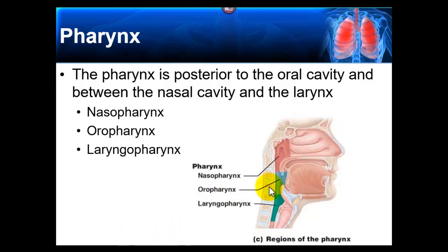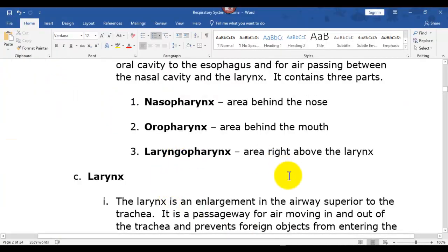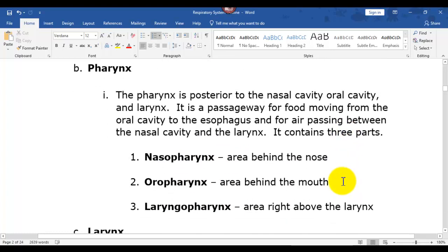In fact, right here is a little passage. Here's where it splits. This front part would be the trachea. The part in the back is the esophagus. So it has three regions. This is behind the nose. Oro, which is behind the mouth. And laryngo is pretty much right above or right where the larynx would be located. It's where the Adam's apple is found. So like it says here, it is a passageway for food, water, and air. Food moving from the oral cavity to the esophagus, or for air passing between the nasal cavity into the larynx.